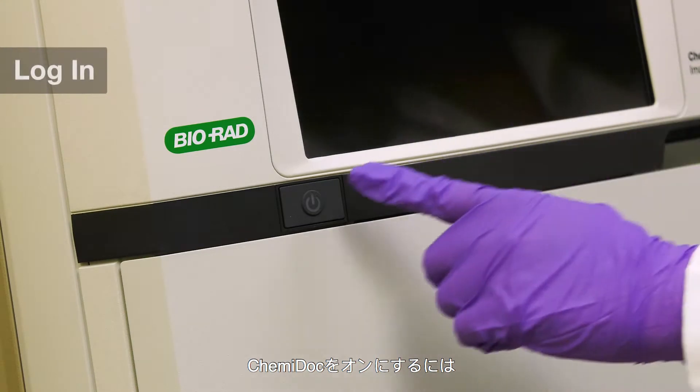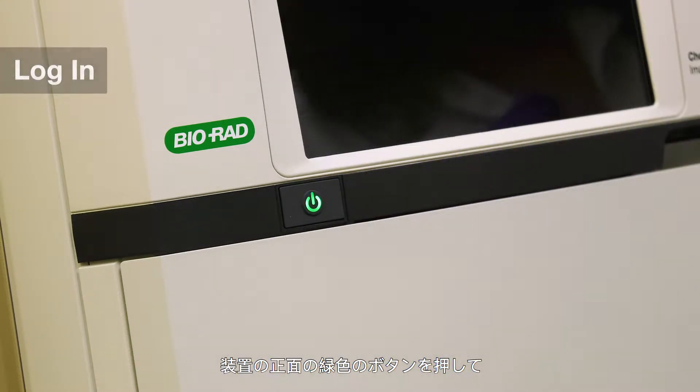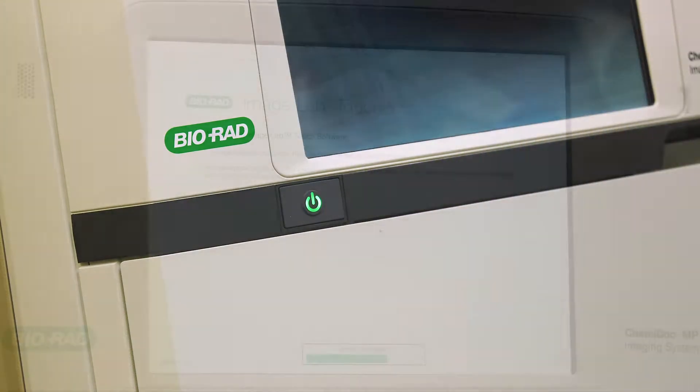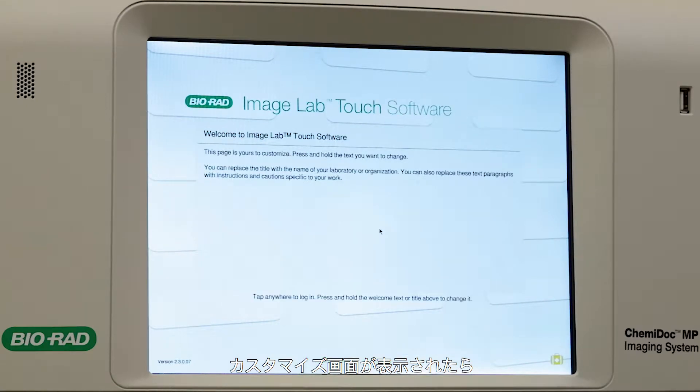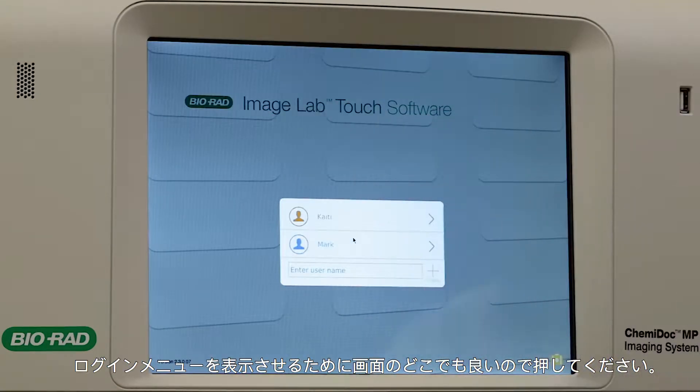To turn your KemiDoc on, push the green button in front of your instrument. When the customizable home screen appears, tap anywhere to bring up the login menu.